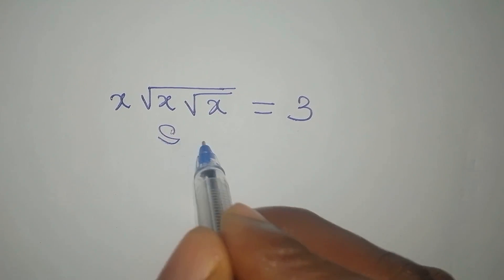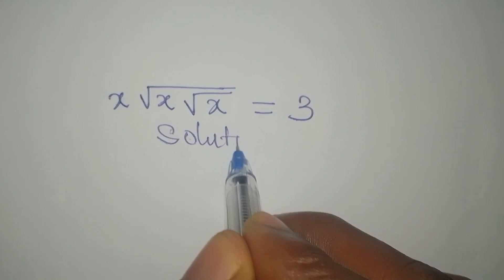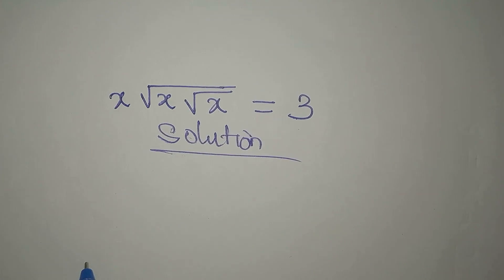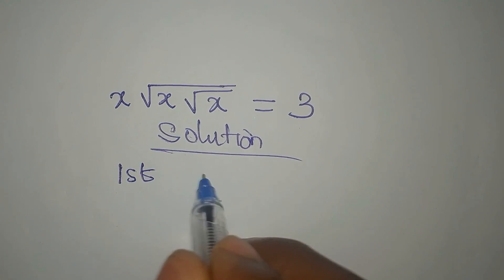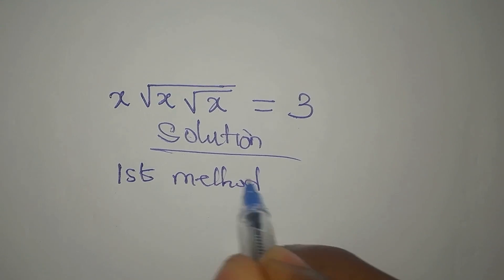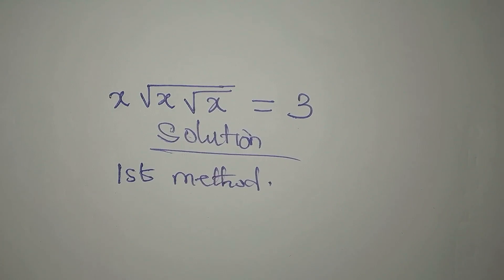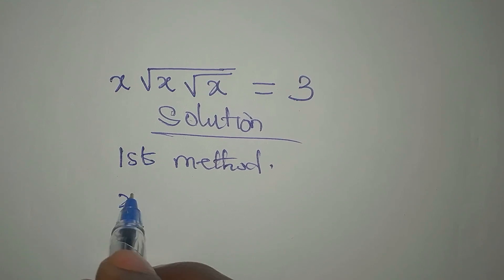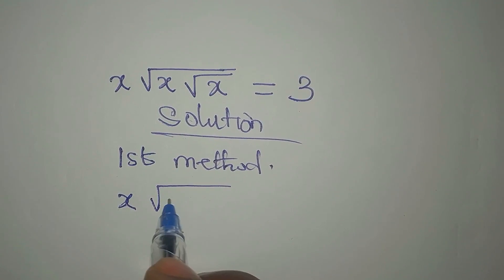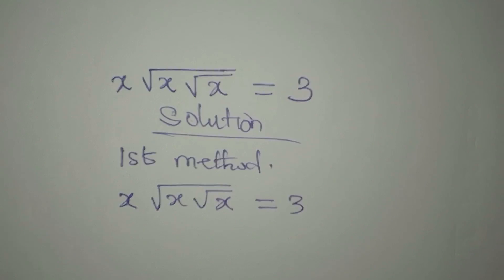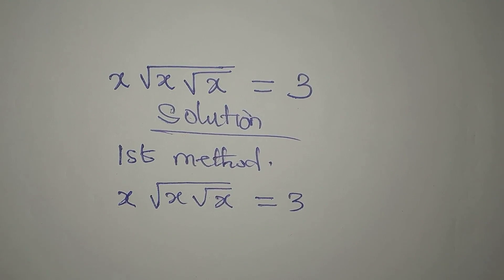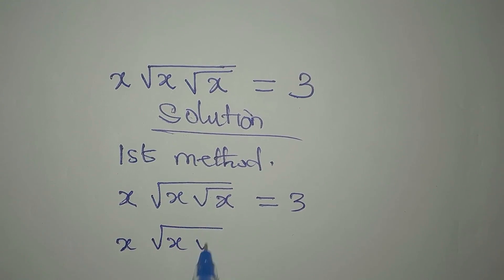Hi everyone, let's provide the solution to this problem, and I want us to deal with this in two ways. Let's look at the first method. We have x times the square root of x times the square root of x equals 3. To remove the square roots, we can remove them by squaring everything.